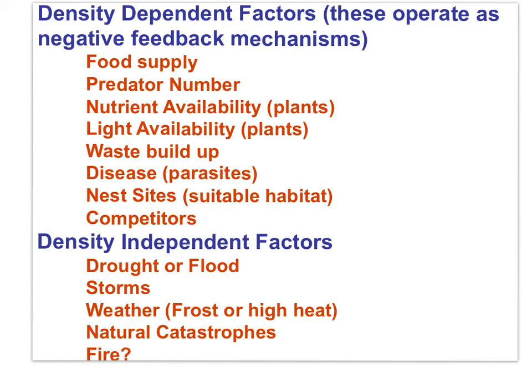Density-dependent limiting factors that operate as negative feedback mechanisms — representing environmental resistance — include food supply, predator number, nutrient availability, light availability for plants, waste buildup, disease, nest sites, and competitors. There are also density-independent factors that limit population growth regardless of population size. For example, a hurricane will reduce the bird population of a small Caribbean island whether the population is large or small.